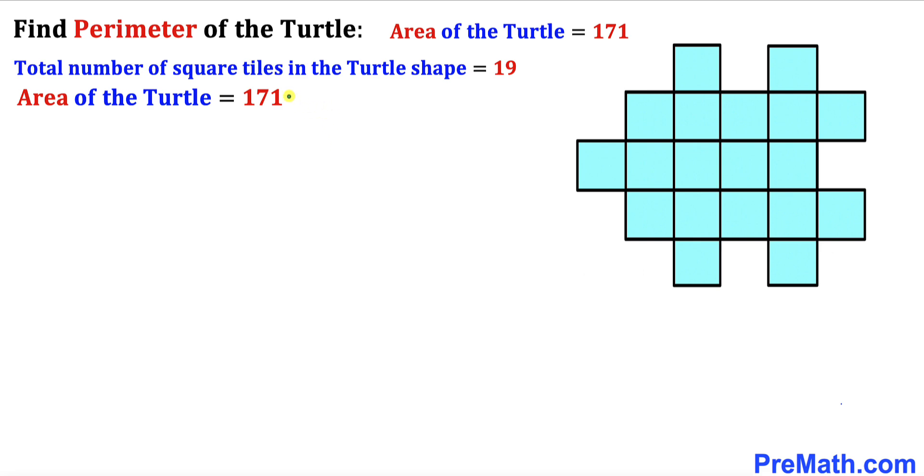We know that the area of this whole turtle is 171 square units. Therefore the area of each square tile is going to be 171, the total area, divided by total number of these square tiles which is 19, and that is going to give us 9. So the area of each square tile is 9 square units.